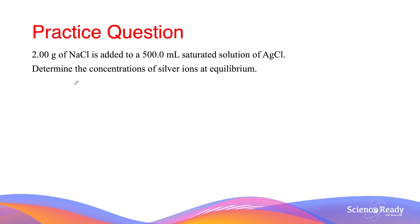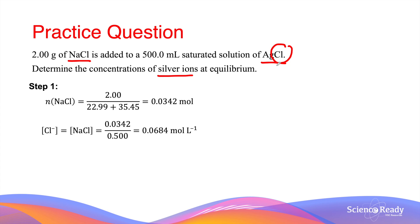Let's take a look at a practice calculation question to do with the common ion effect. Two grams of sodium chloride is added to 500 millilitres of saturated solution of silver chloride. Keep in mind that sodium chloride is very soluble because it's a sodium-containing compound, whereas silver chloride is very insoluble. Determine the concentrations of silver ions at equilibrium. This is a common ion effect question because both compounds contain the common ion chloride. The solubility of silver chloride is greatly reduced when some amount of sodium chloride is added, as the equilibrium position in the dissolution of silver chloride is shifted to the left side. To calculate the concentration of silver ions, we first need to find out the concentration of chloride that is added by the sodium chloride.